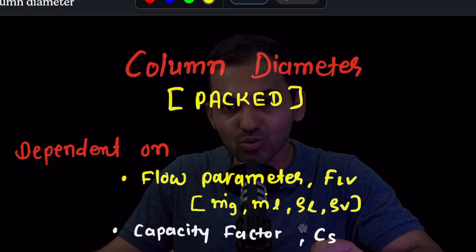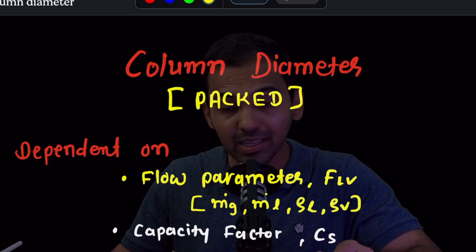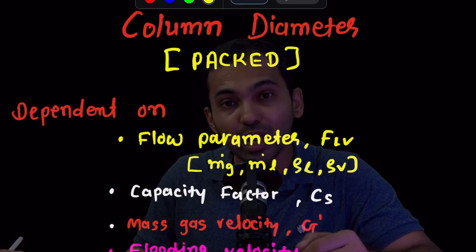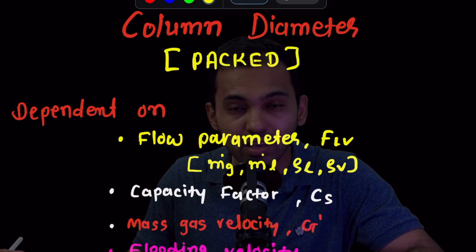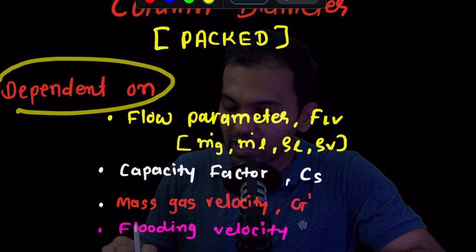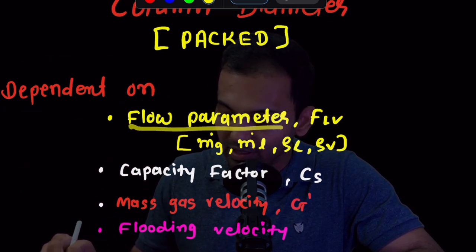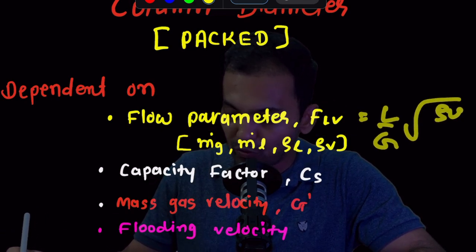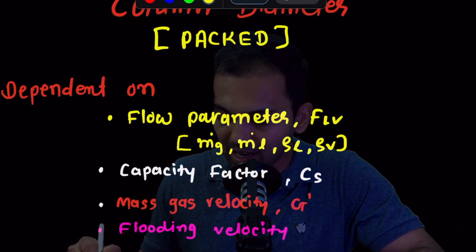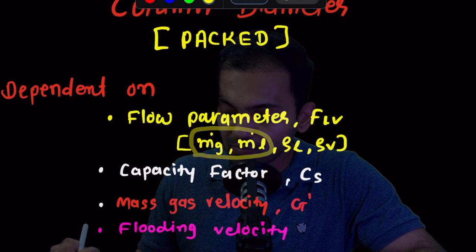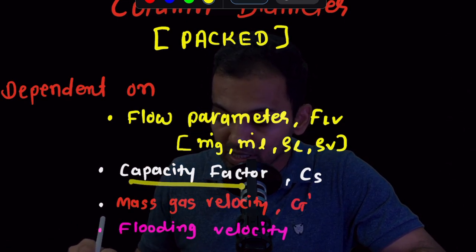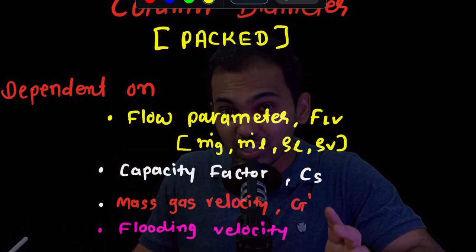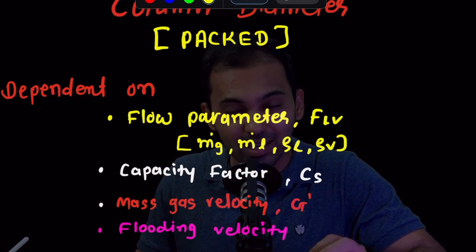For packed column diameter calculation, as you may see on the screen, it depends mainly on flow parameters which are highly impacted to calculate pressure drop, diameter, or any sizing of the tower. The flow parameter is FLV, which equals (L/G) × √(ρᵥ/ρL) — it depends a lot on liquid-gas mass flow rate and density. Then there is the capacity factor, which we discussed in previous lectures, where mass transfer efficiency HETP depends on capacity factor CS.